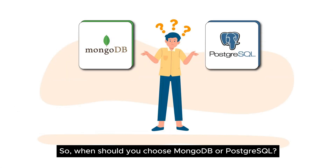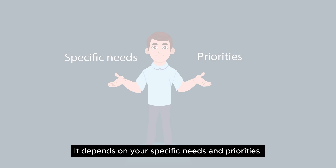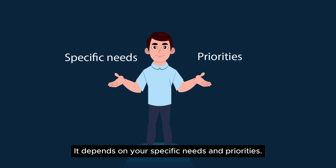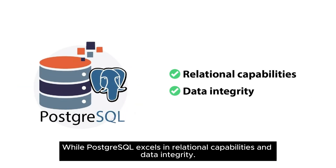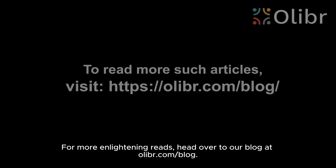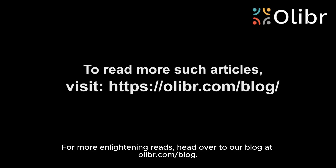So when should you choose MongoDB or PostgreSQL? It depends on your specific needs and priorities. MongoDB is great for rapidly evolving applications and horizontal scalability, while PostgreSQL excels in relational capabilities and data integrity. For more enlightening reads, head over to our blog at olibr.com/blog.